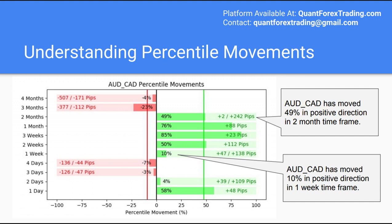Some examples: the AUD CAD has moved 10% in the positive direction on the weekly timeframe, and 49% on the two-month timeframe. The numbers on the far right and left of the chart are the number of pips that the pair could move against us if we placed a trade in the opposite direction. So you would say if we shorted or sold the AUD CAD over the one-week timeframe, it could potentially move 138 pips against us 5% of the time, and 47 pips against us 50% of the time. These ranges are important because they tell us how we should set our stop loss and how we should subsequently size our position.